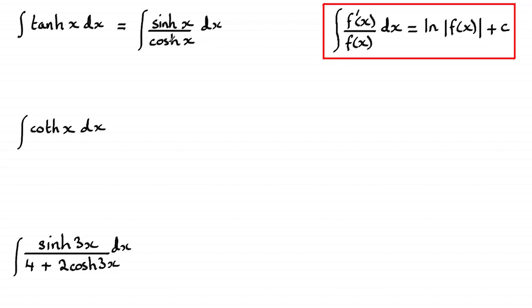So when I look at this, knowing that the differential of cosh x is sinh x, then I've got this particular integral type. So the answer's just going to be the natural log of cosh x plus the constant of integration.